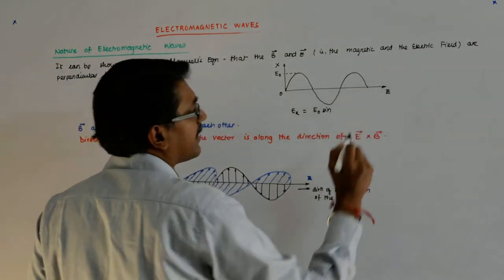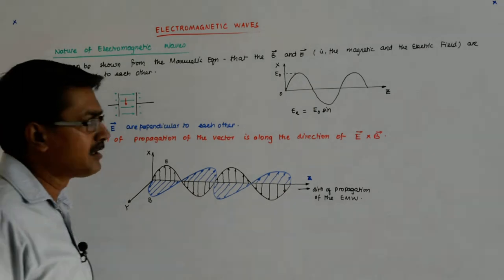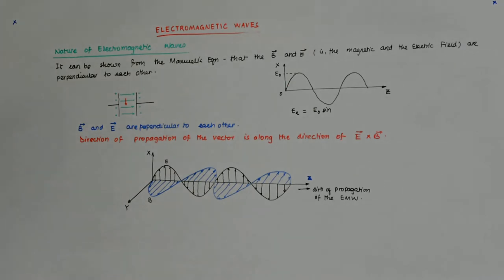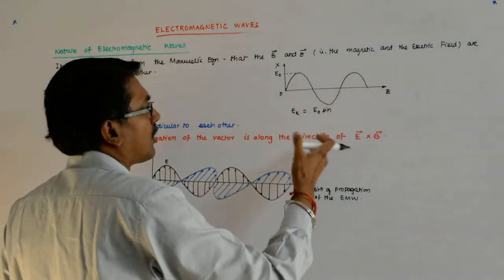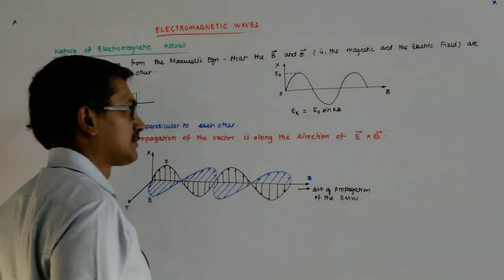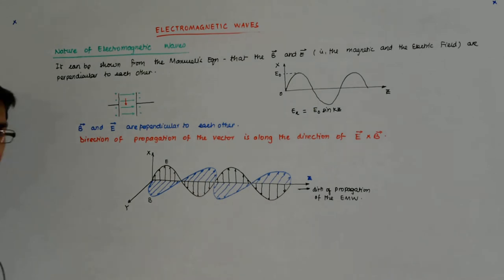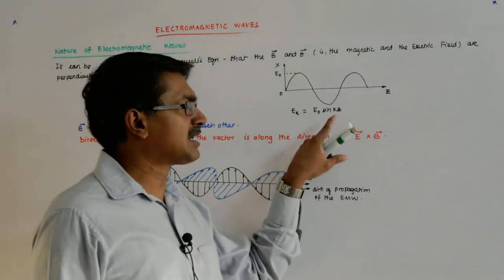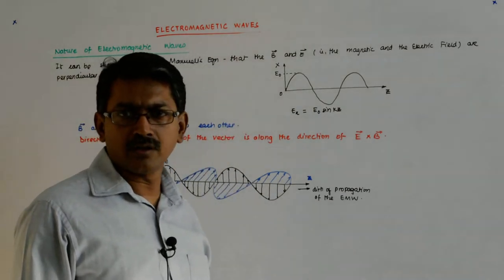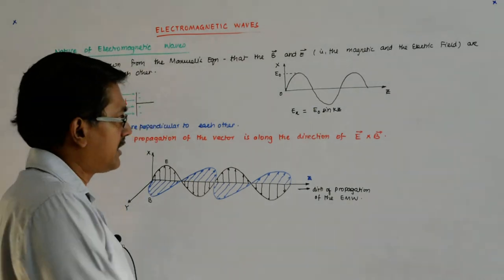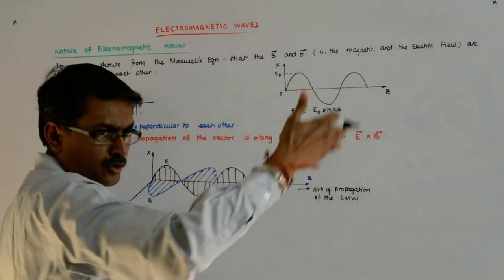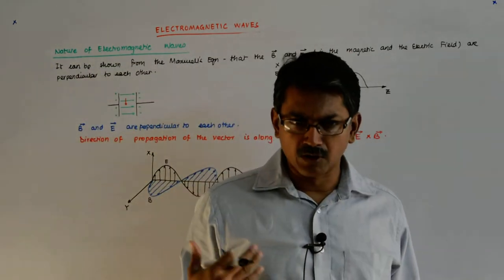Since it can have whatever frequency or wavelength I want, I write it as sine(kz). I could have written it as just z, but what additional freedom does k give me? k is the wave number. If I go on increasing k, then in the same 0 to 2π there will be more number of waves.